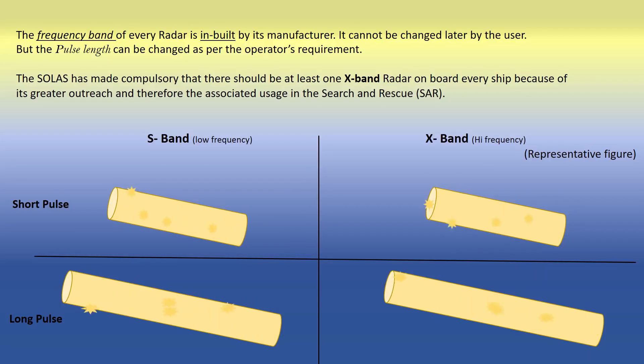The frequency band of every radar is inbuilt by its manufacturer. It cannot be changed later by the user. But the pulse length can be changed as per the operator's requirements.